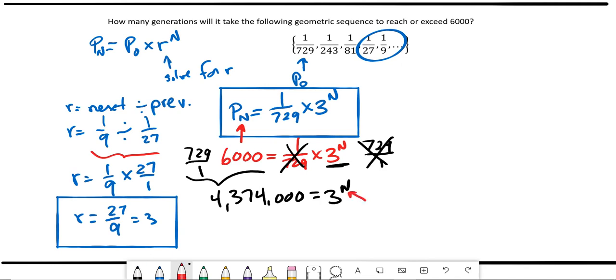And the logarithm has to have a base that matches the exponential base. So we're going to take log base 3 of 3 to the n to extract the n variable. But anything you do to one side of an equation, you need to do to both sides. So we're going to take log base 3 of this 4,374,000.